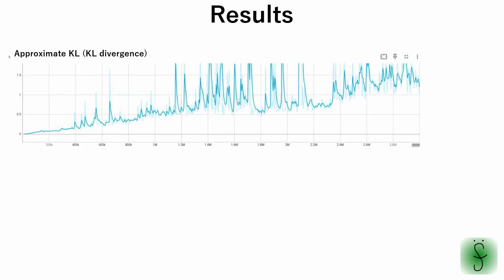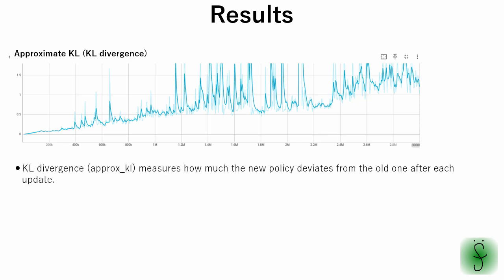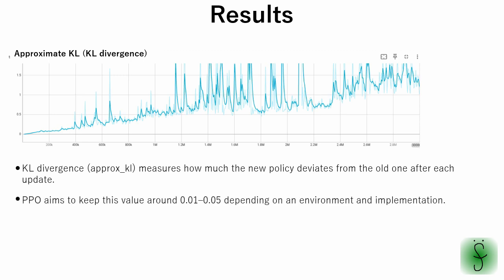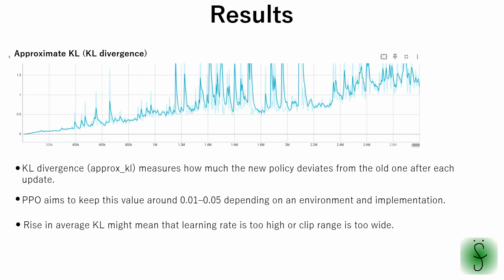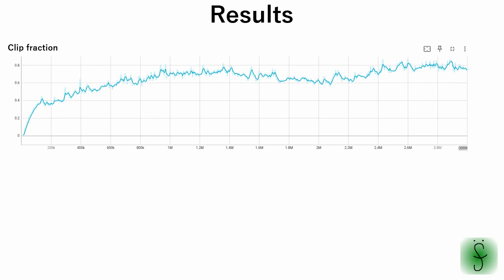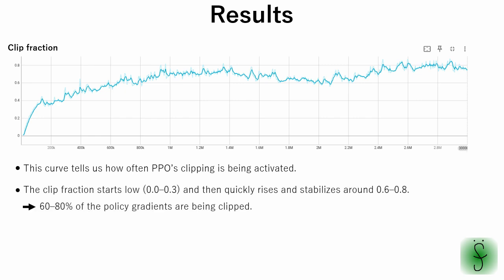Next, let's see approximate KL. This metric measures how much the new policy deviates from the old one after each update. Generally, PPO aims to keep this value between 0.01 and 0.05 depending on the environment and implementation. In our case, KL rises throughout training, which indicates that the learning rate is too high or the clip range is too wide, so we might need to reduce it for more stable training. Another useful metric is clip fraction — it tells us how often PPO's clipping is being activated. In our case, the clip fraction quickly rises and stabilizes around 0.6 to 0.8, which is too high. Ideally it should be in the 0.1 to 0.3 range, so the learning rate or clip range should be reduced.